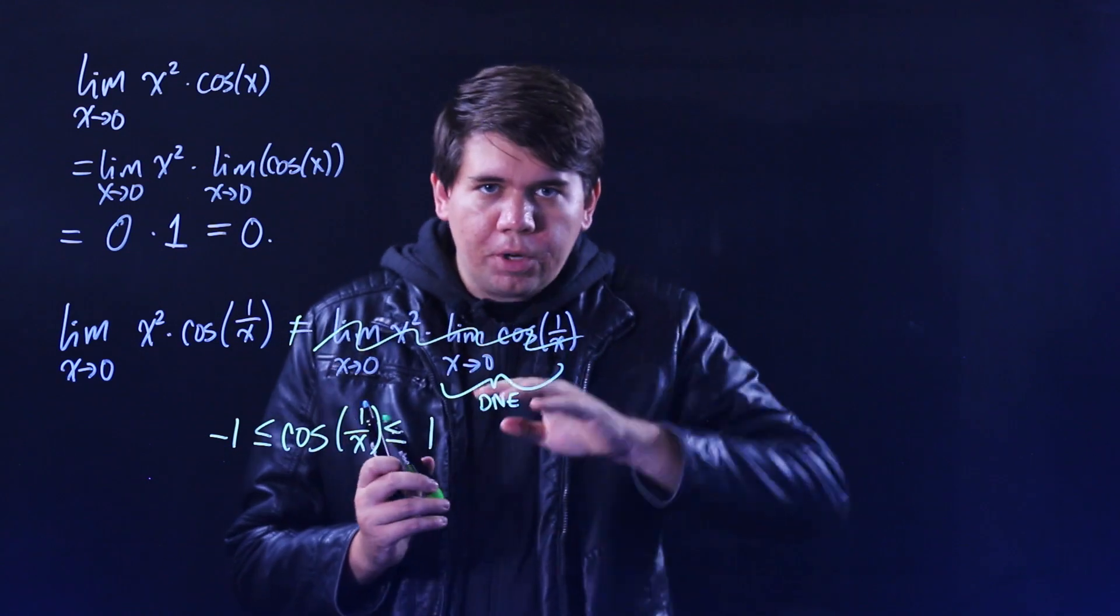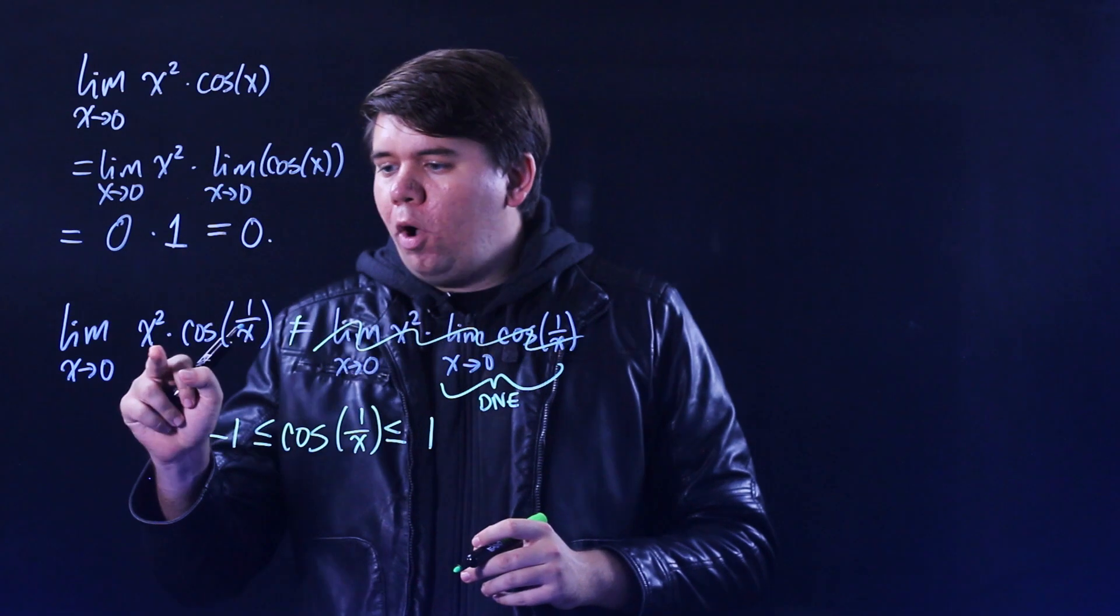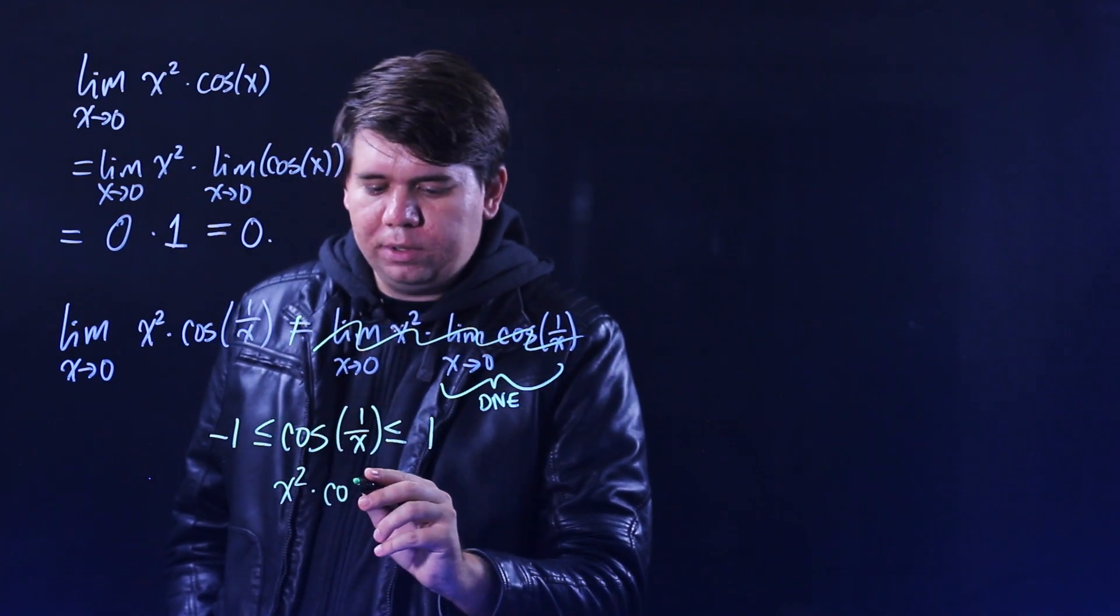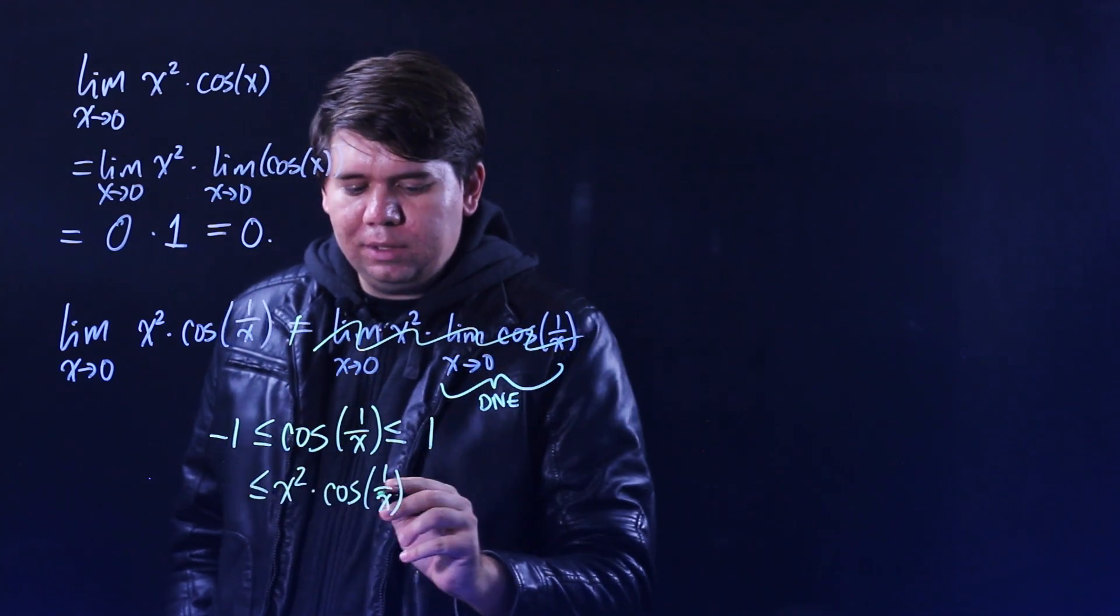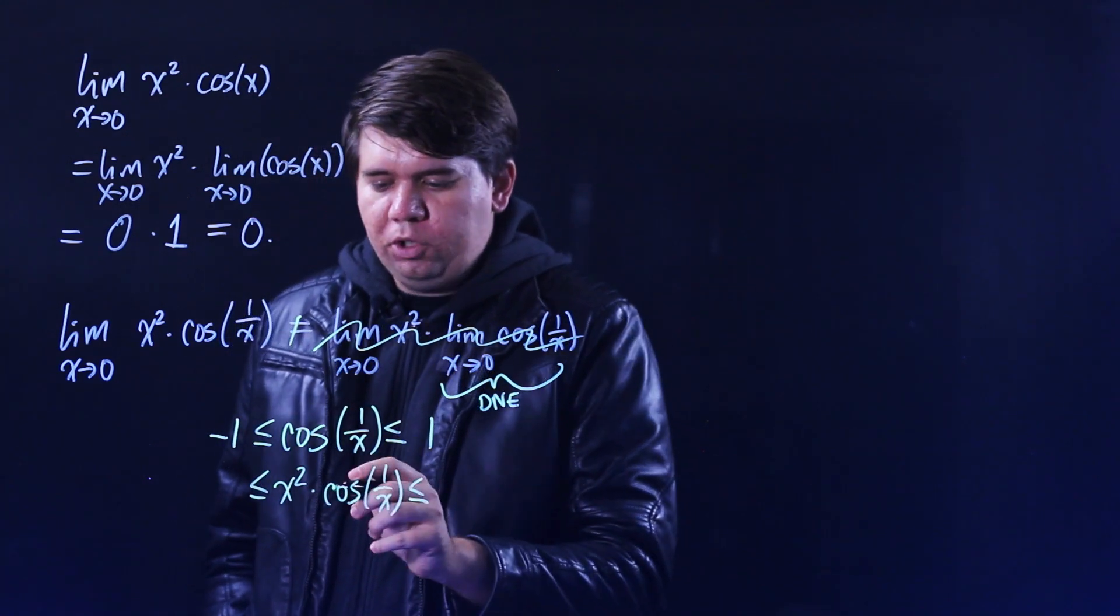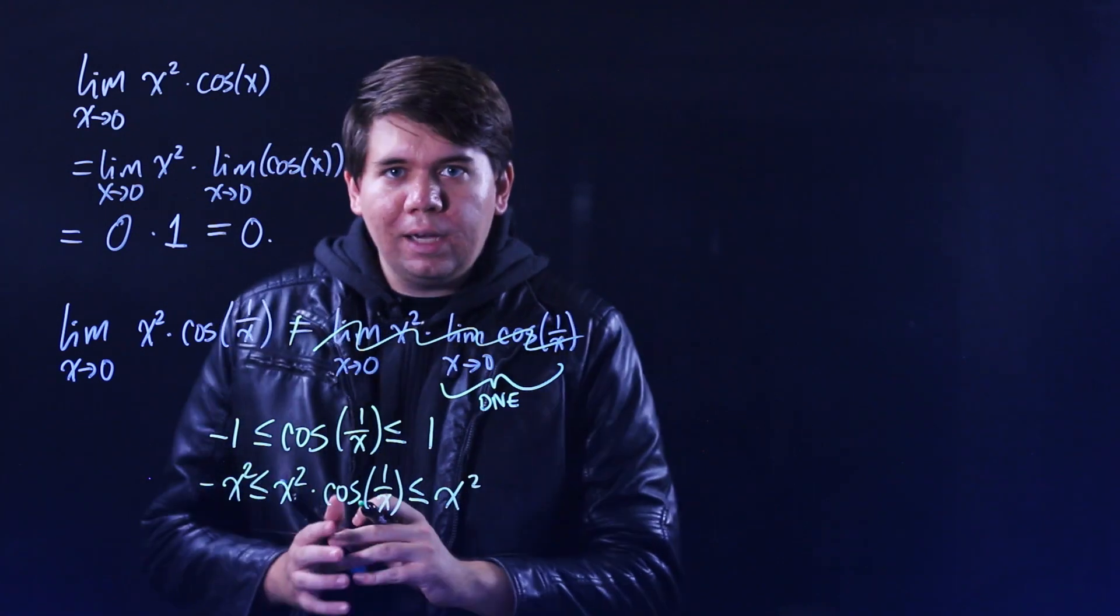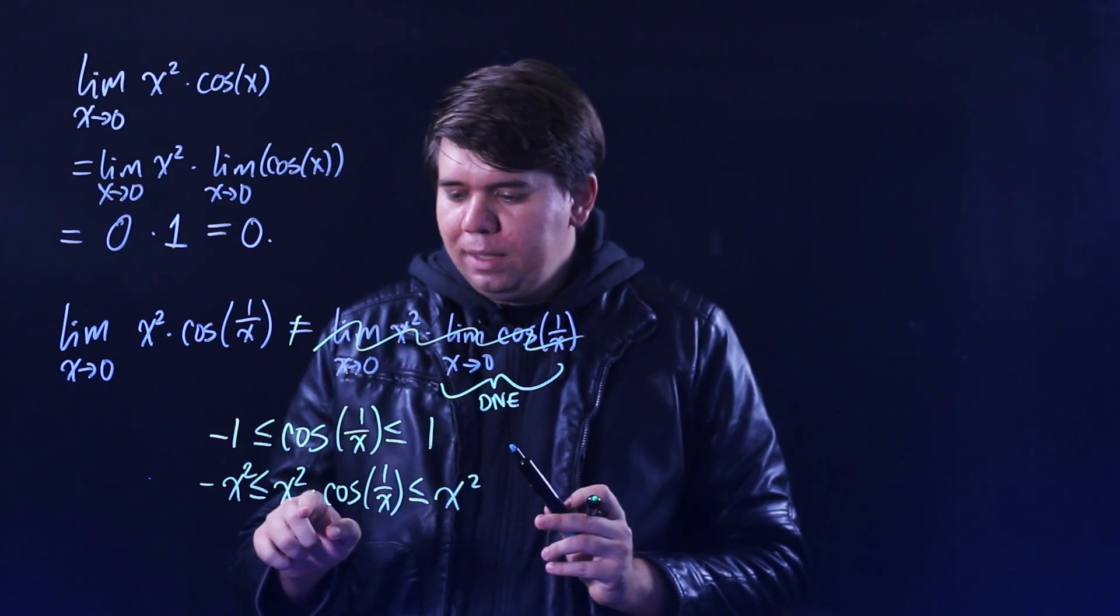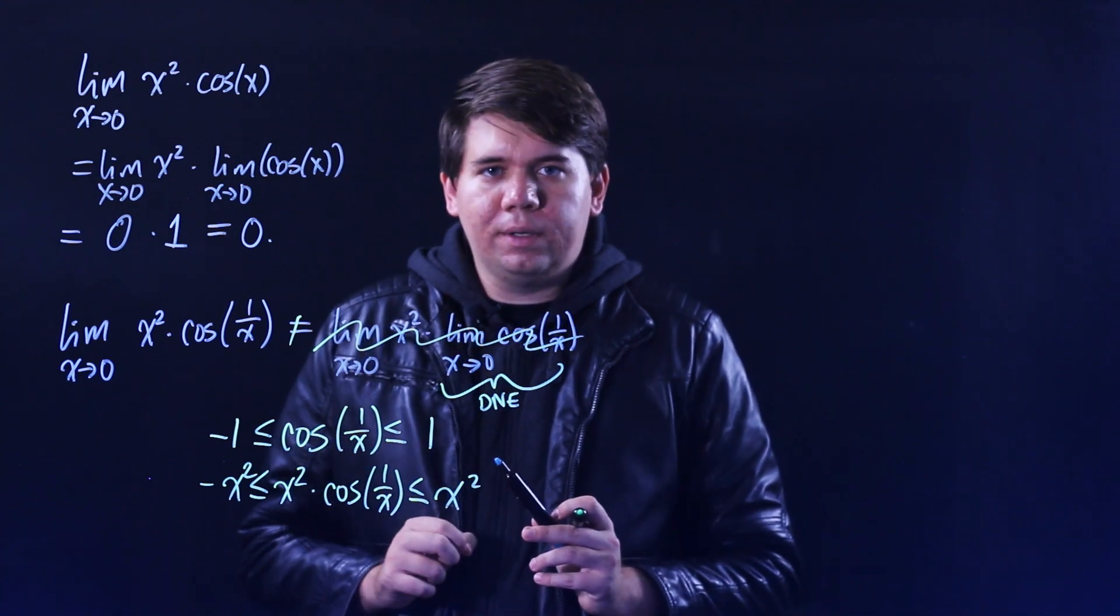Cosine of anything, cosine just moves from minus one to one. And so therefore, when you multiply by x squared, your x squared times your cosine of one over x will have to give out some value that's between minus x squared and x squared. x squared is some positive number, so you can just multiply through your inequalities by it and you get something between minus x squared and positive x squared.